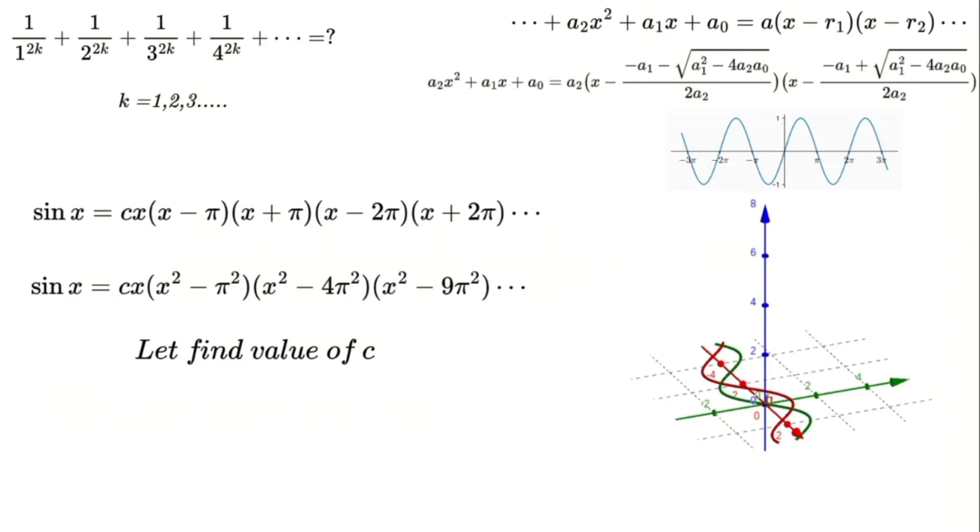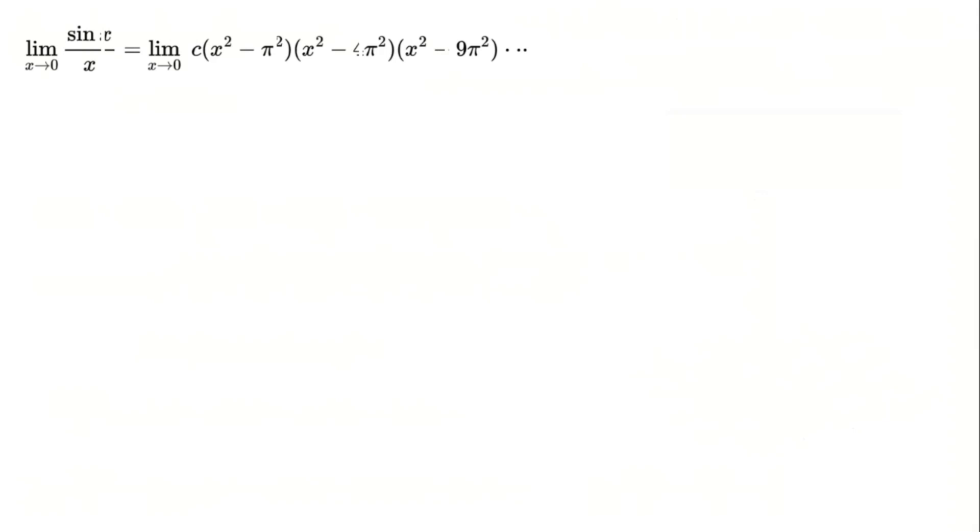To calculate c, we first move x to the left side of the equation. Using the limit as x approaches 0, we encounter a 0 over 0 indeterminate form. This is where calculus saves the day.